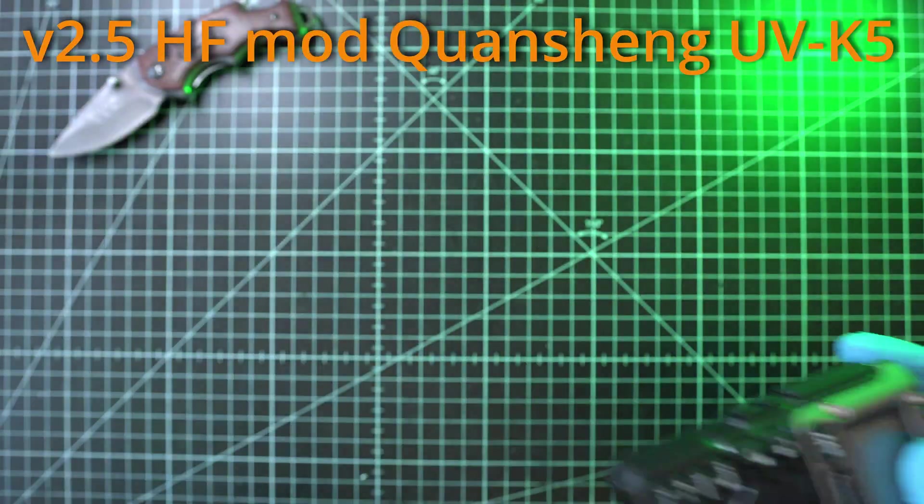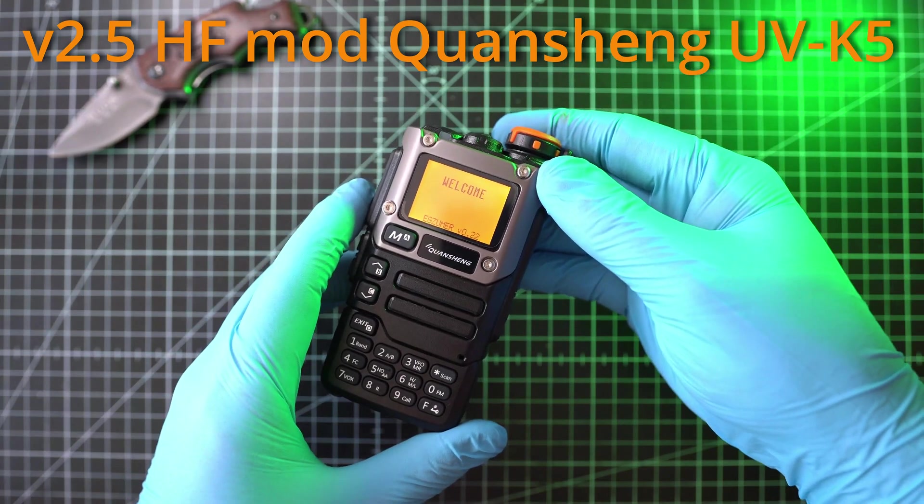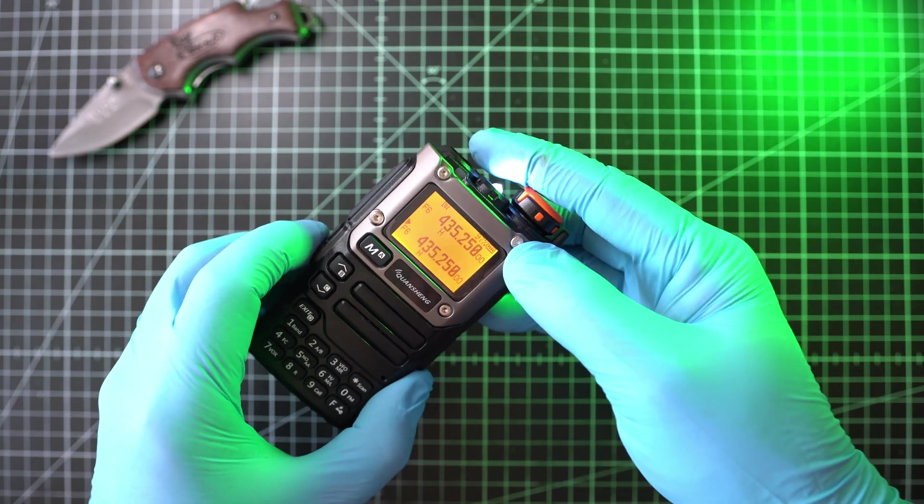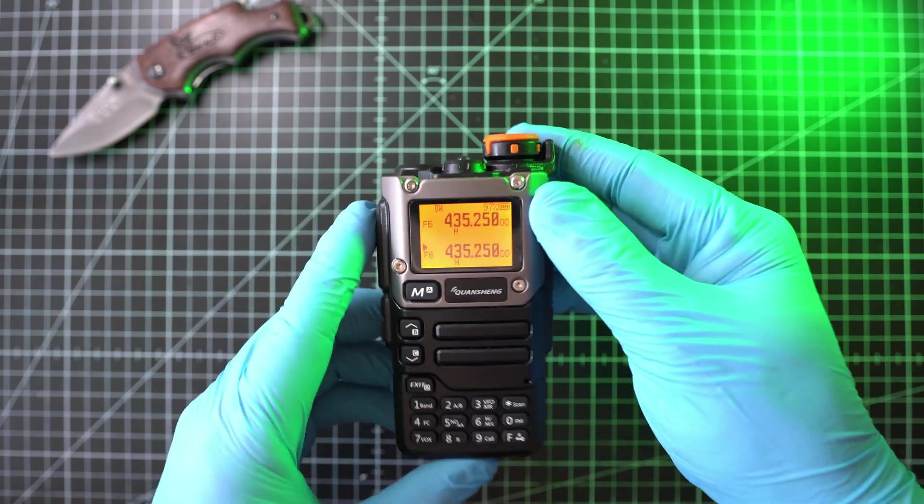Welcome back to Take A Part and version 2.5 of Quansheng UVK5 HF mode. The 2.5 mode has an additional antenna that will replace the LED, so let's see.